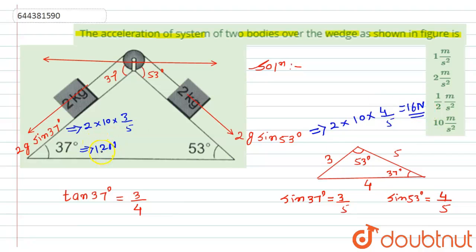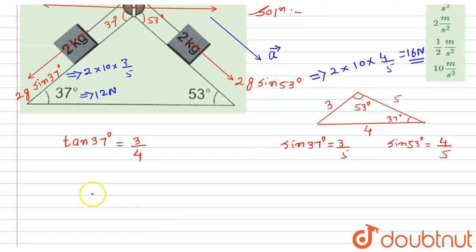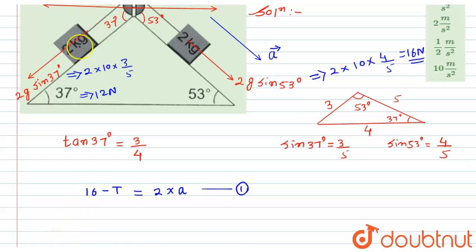The acceleration will be in the direction of this 16 newton force. By using Newton's law, I can write the equation for this side: 16 minus tension T equals mass times acceleration, that is 2a. Let this be equation 1.